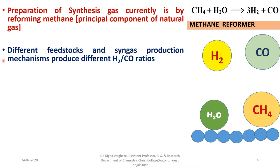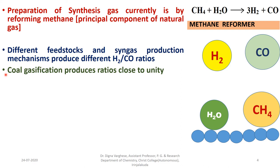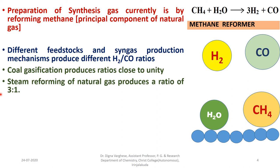Coal gasification produces ratios close to unity. Coal gasification is the process of producing syn-gas, where carbon reacts with water giving carbon monoxide and hydrogen. Coal gasified to produce coal gas or town gas gives a hydrogen-to-carbon monoxide ratio of approximately 1. Steam reforming of natural gas produces a ratio of 3 to 1.